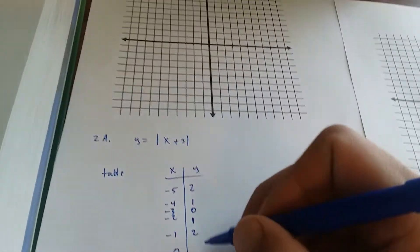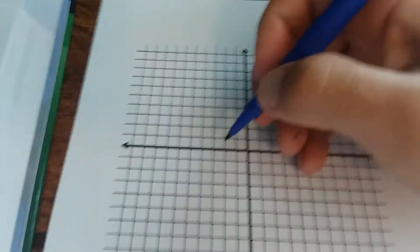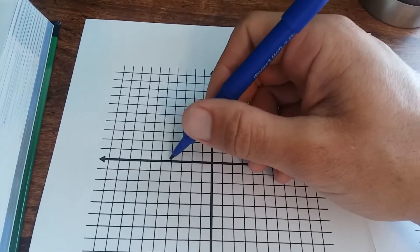And you put in 0, you get 3. So we have negative 5, 2. We've got to graph all these points. 1, 2, 3, 4, 5.